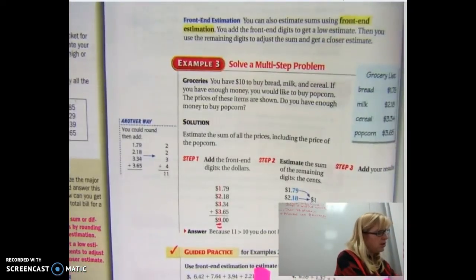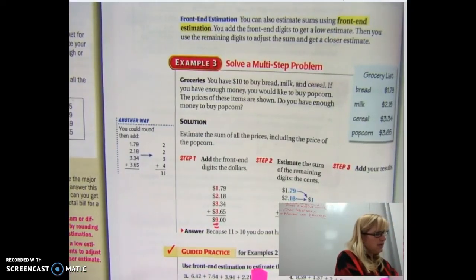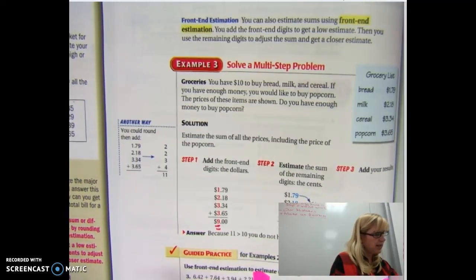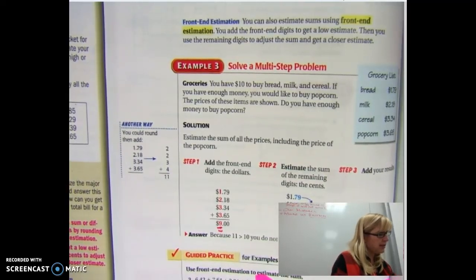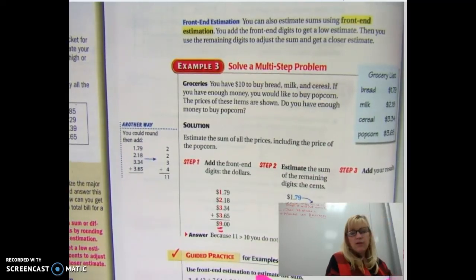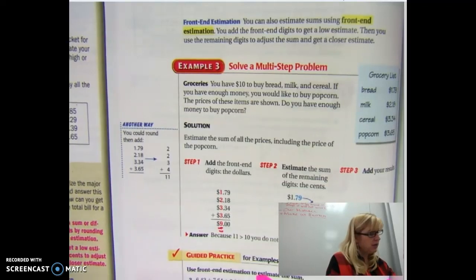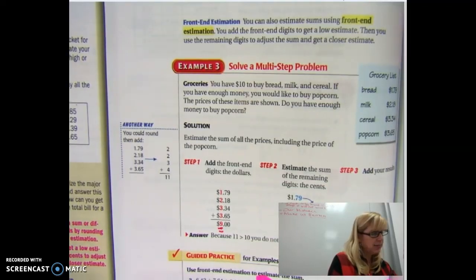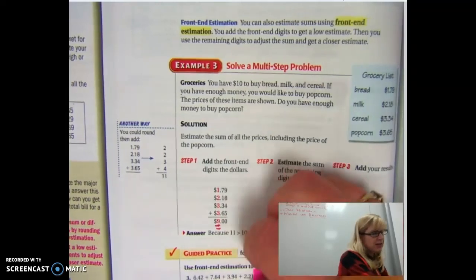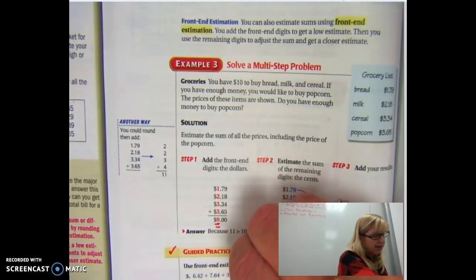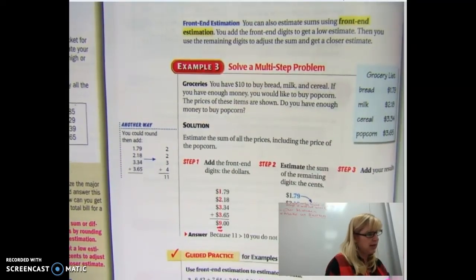So I want you to try six dollars and 42 cents, seven dollars and 64 cents, three dollars and 94 cents, and two dollars and 21 cents. Do the front end estimation technique where you add the front, circle up the end numbers to see the dollars that it makes. Pause the video, figure that out. Okay. If you've just paused it, I'm going to reveal and you should have gotten about 20 dollars.